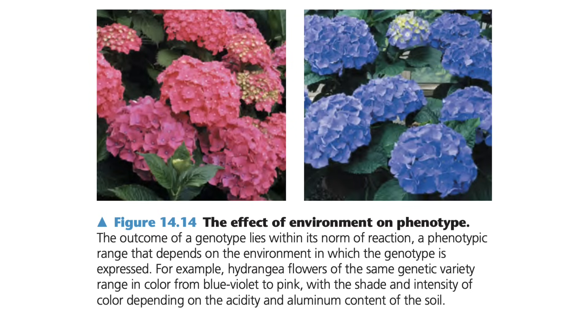Gene-to-environment interactions is one of my favorite topics — the extent to which our environment shapes the expression of our genes. Without getting bogged down in the details, let's take a look at the most representative example from the book, which is hydrangea flowers. Even if they were all genetic clones of one another, we would have different flower colors based on the acidity and chemical composition of the soil, meaning that those genes are affected in their expression by the environment in which the plants are grown.